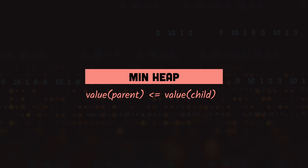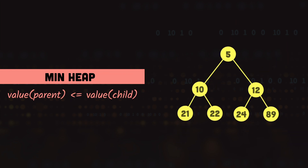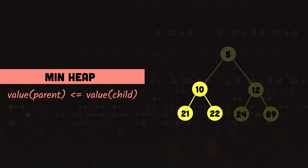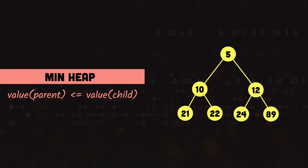Let's look at an example. We have a binary tree with these values. You can see that the value of each parent node is less than its children: 5 is less than 10 and 12, 10 is less than 21 and 22, and 12 is less than 24 and 89. Because the tree fulfills the properties of a heap and a min heap, we can say that this tree is a min heap.